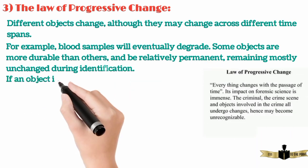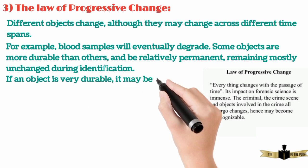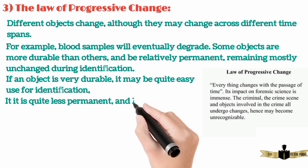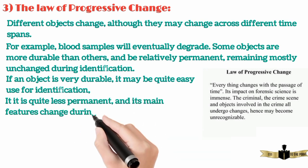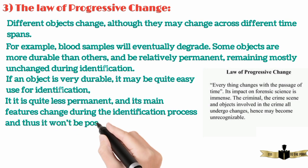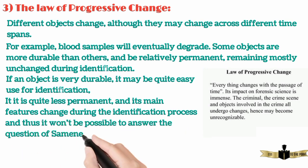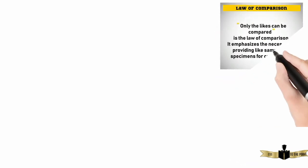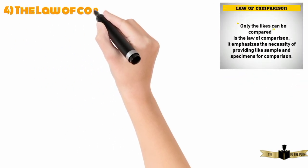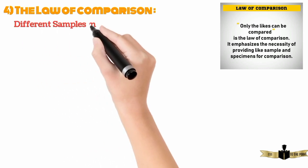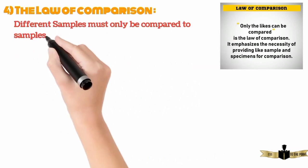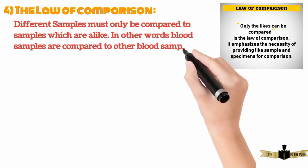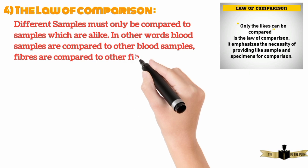If an object is very durable, it may be quite easy to use for identification. If it is quite less permanent and its main features change during the identification process, it won't be possible to answer the question of sameness. Fourth, the Law of Comparison. Different samples must only be compared to samples which are alike. In other words, blood samples are compared to other blood samples, and fibres are compared to other fibres.